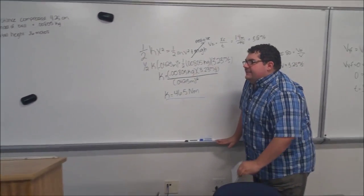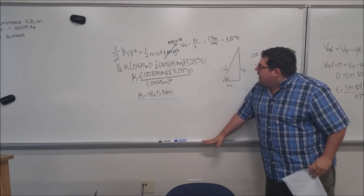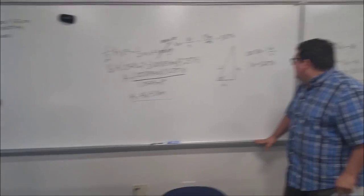If you're noticing this, this is one of the unintended consequences of having to run out of the classroom. Our K value ended up being 46.5 Newton meters.